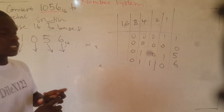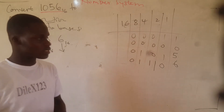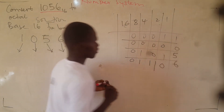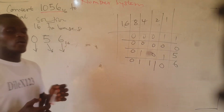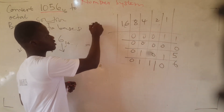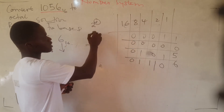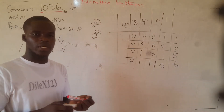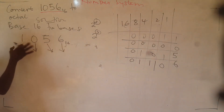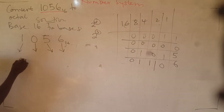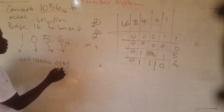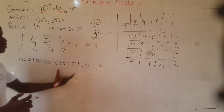We've been able to represent each of the hexadecimal digits using 4 bits each. The reason we use 4 bits is because the number is in hexadecimal, which is base 16, and 16 can be written as 2 to the power of 4 — so we represent each digit in 4 bits. If it were octal, we'd use 3 bits. So: 1 is 0001, 0 is 0000, 5 is 0101, and 6 is 0110. This is the binary representation.